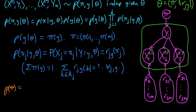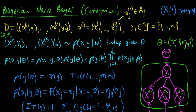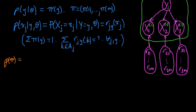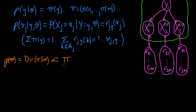What priors should we choose? Since these are categorical — that's our assumption, we're working with everything categorical, and since it's classification, all the y's take finitely many values — a natural choice is the Dirichlet prior. So we make this a Dirichlet distribution: the prior on π is Dirichlet(π; α), which is proportional to the product over y from 1 to m of π_y to the power α_y minus 1.